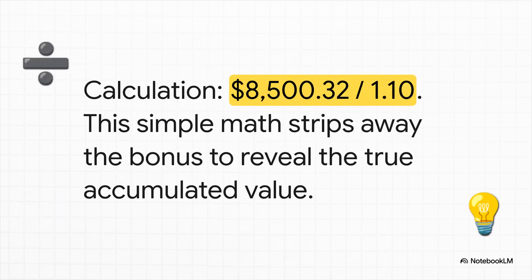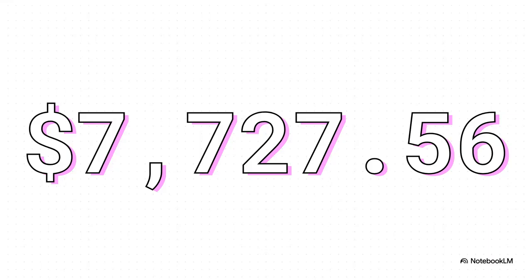So how do we do that? It's actually some pretty simple math. Since that final number is 110%, we just have to divide it by 1.10. That takes us right back to the original 100% and leaves us with just our contributions and what they earned. And that gives us our real number, $7,727.56.